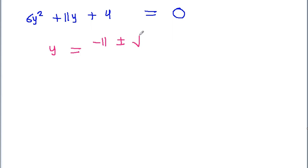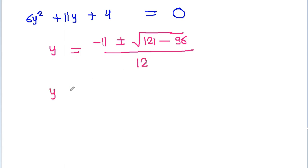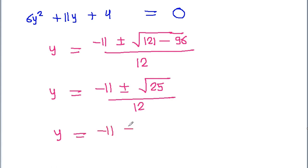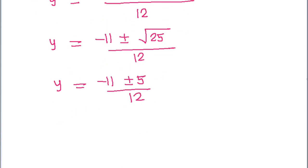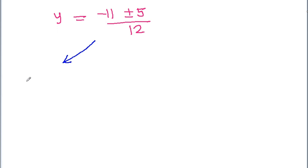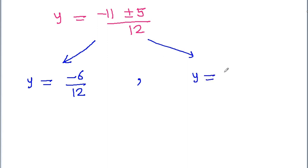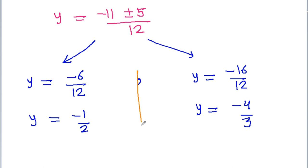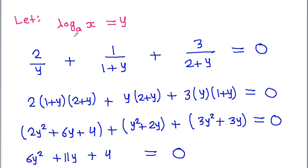Using the quadratic formula: y = (11 ± √(121 - 96)) / 12 = (11 ± √25) / 12 = (11 ± 5) / 12. This gives two values: y = (11 + 5)/12 = -6/12 — wait, y = (-11 + 5)/12 = -6/12 = -1/2, and y = (-11 - 5)/12 = -16/12 = -4/3.